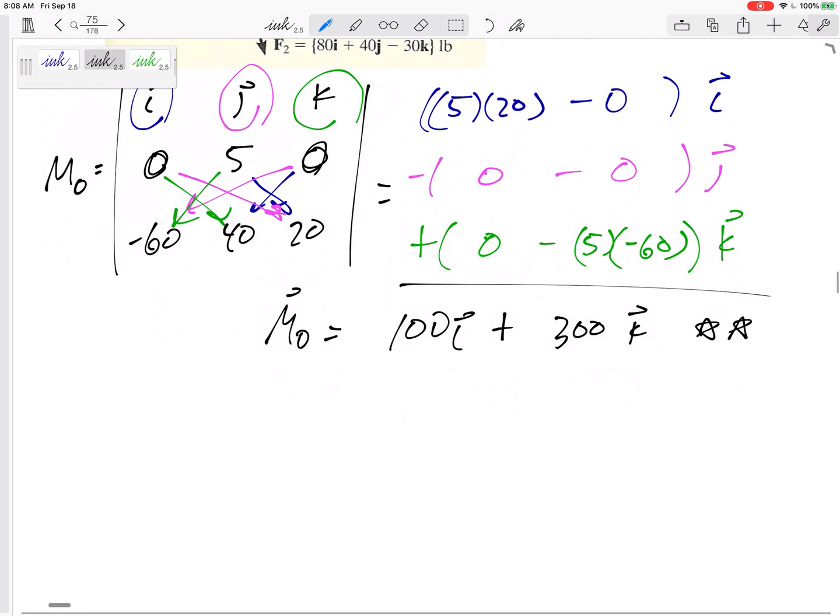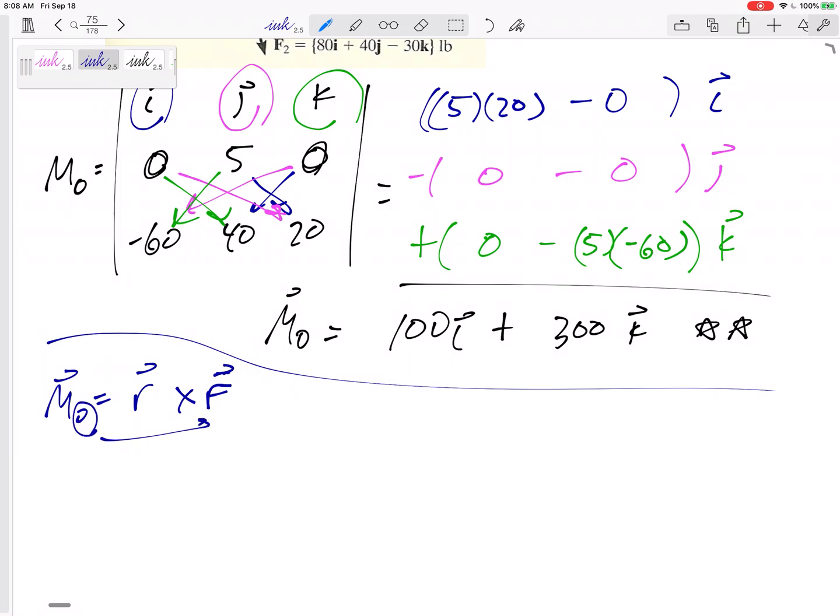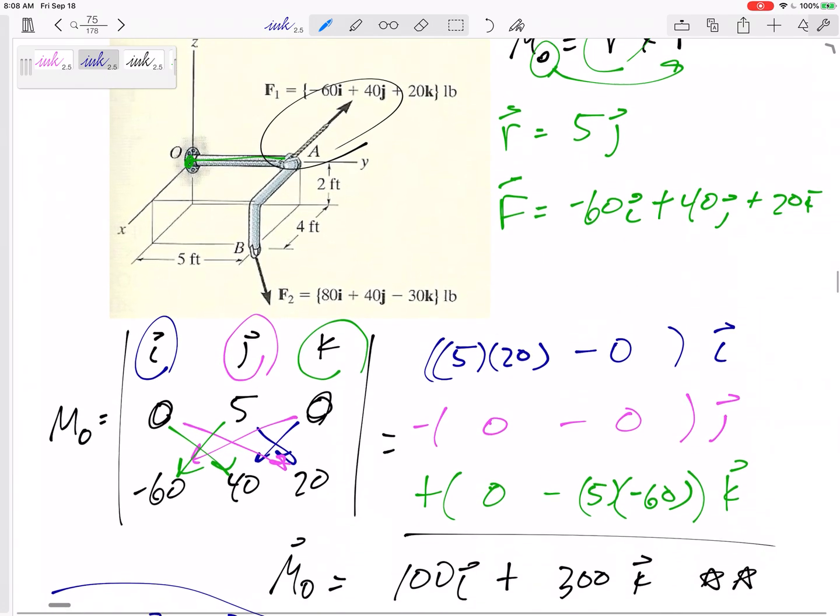How about the second force? How about the second force? So the second R cross F, moment equals R cross F. R is from the point to the force. So what is my R for this one?